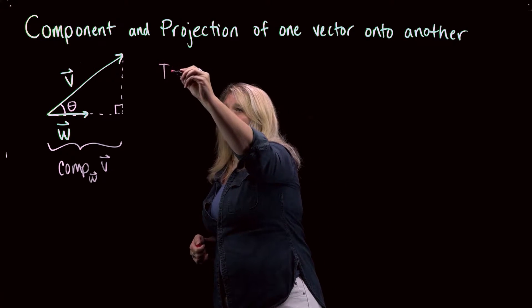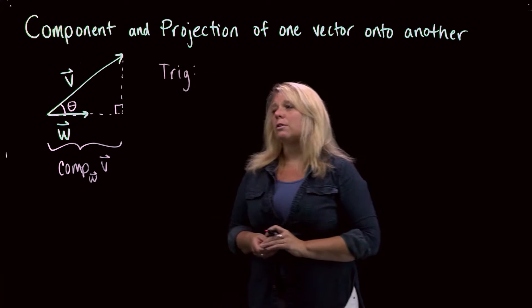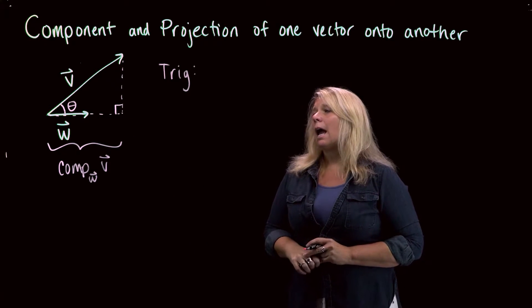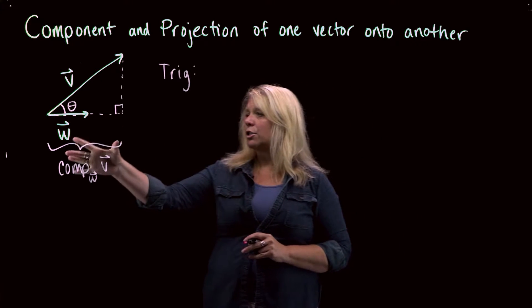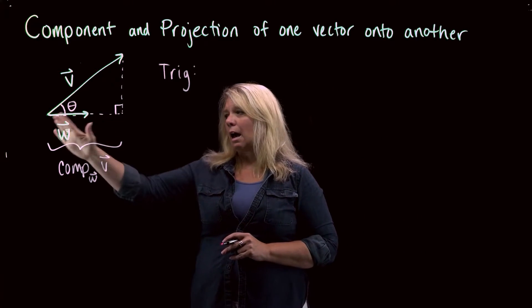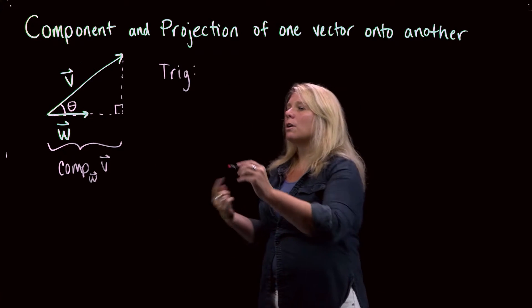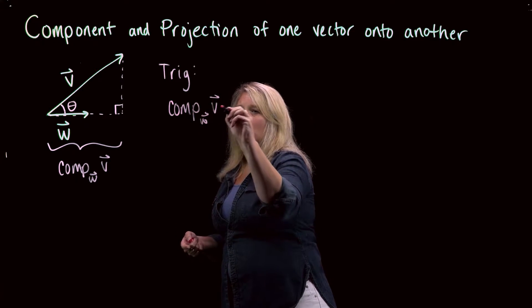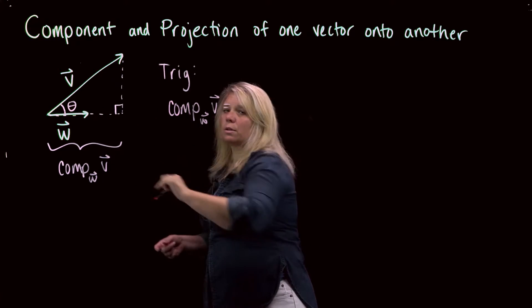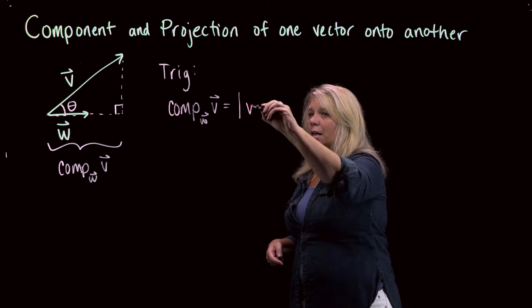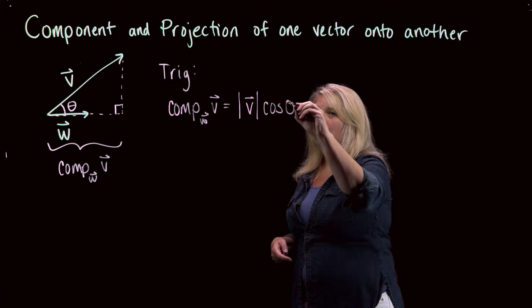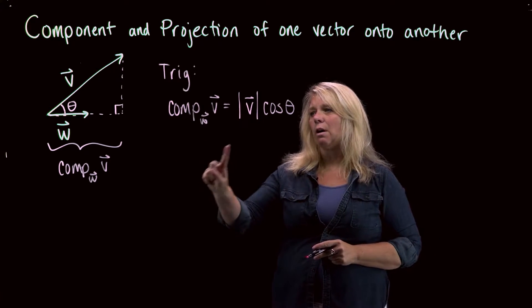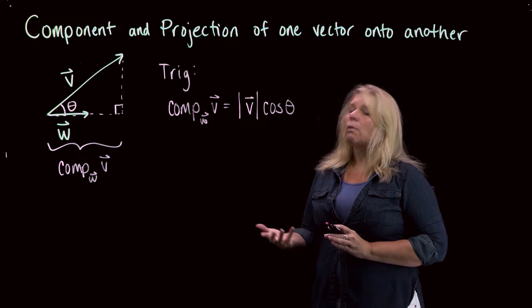One of them is just right triangle trigonometry. What we're measuring here is the adjacent side on this right triangle, and cosine theta is adjacent over hypotenuse. Solving for the adjacent side: the component of V along W equals the length of the hypotenuse — the magnitude of vector V — times cosine theta. This is essentially cosine equals adjacent over hypotenuse, multiplied through by the hypotenuse to solve for what we're after.